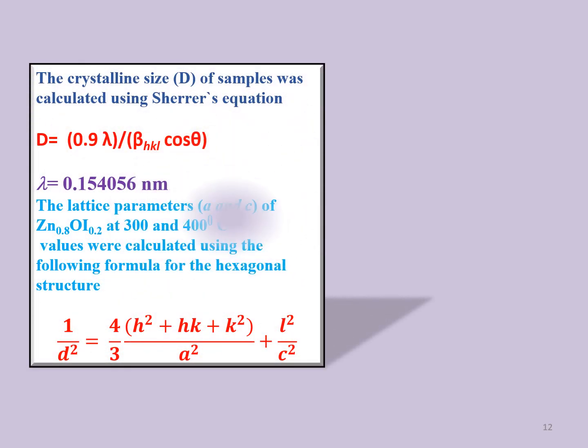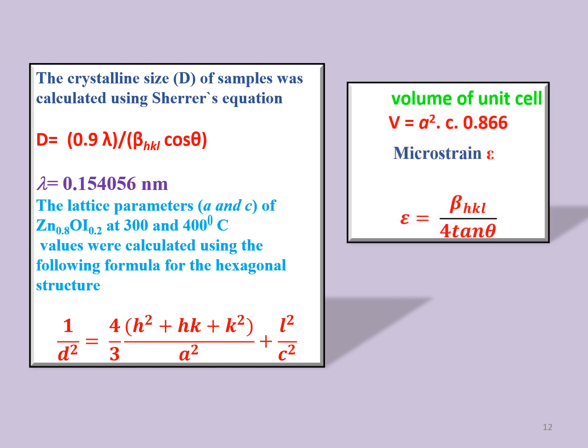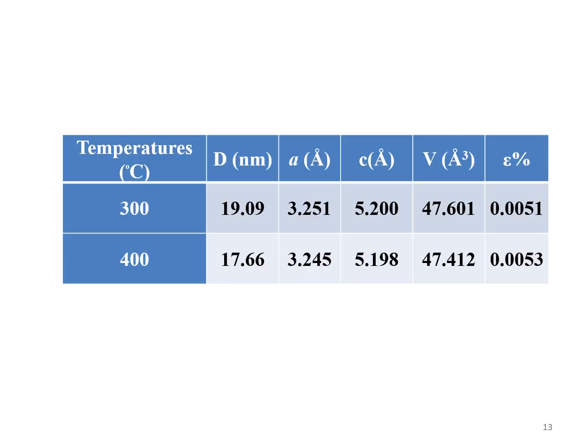The crystallite size of the sample was calculated using Scherrer equation. Lattice parameters a and c were calculated using Bragg's formula. Volume of unit cell and microstrain are also calculated. The crystallite size decreases with increasing calcination temperature due to strain increases.